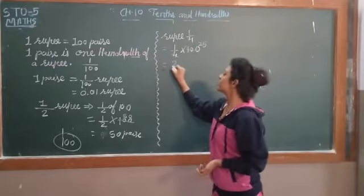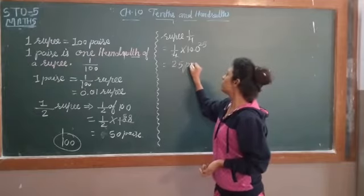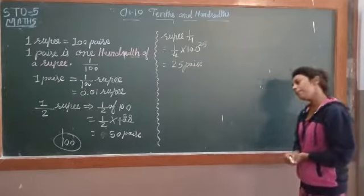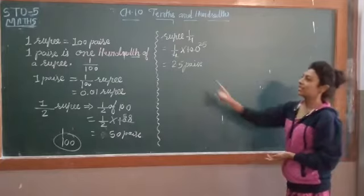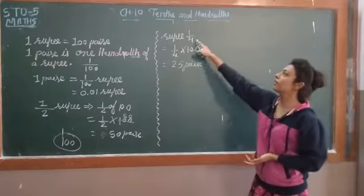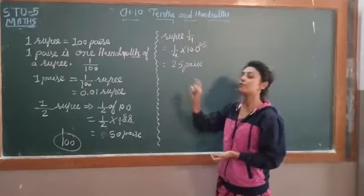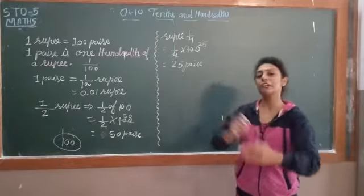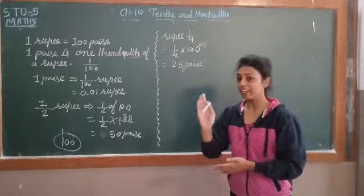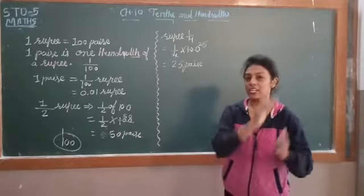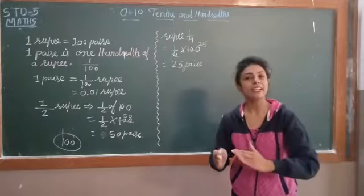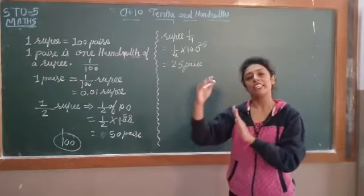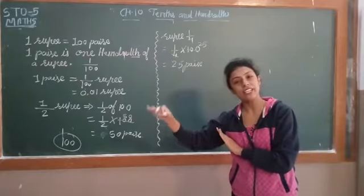So it means 25 percent. Yes, 1/4th is equal to 25 paise. 1/4th part of 100 is 25. So: 25, 25, 50 — the 25-paise parts come together to make a total.